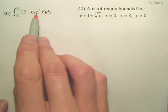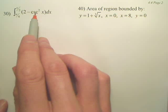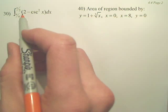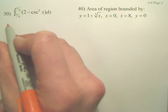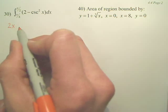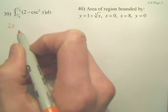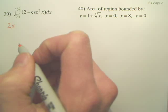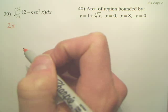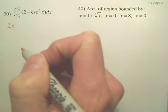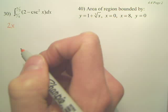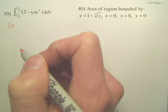So this might scare you, but hopefully not. What's the integral of 2? The integral of 2 is 2x. Now the integral of secant squared x — what derivative gives you cosecant squared x? Cotangent.